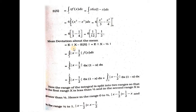E of x is equal to the integral of x into f of x dx. F of x is 6x into 1 minus x, so we substitute: x into 6x into 1 minus x. The limit is 0 to 1.